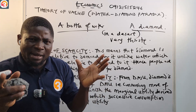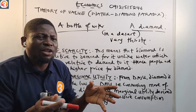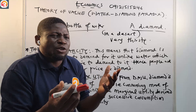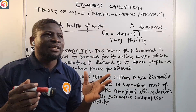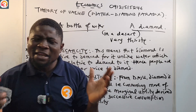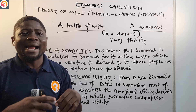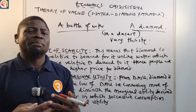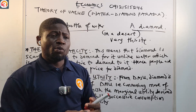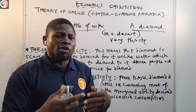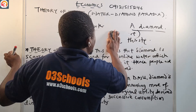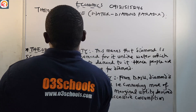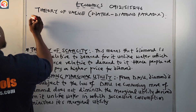That is what the water-diamond paradox is telling us: depending on the situation, you perceive value differently. There are many interpretations of the theory of value. One is by Adam Smith. Let us look at some of those interpretations, starting with number one — the labor theory of value.